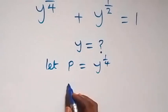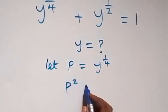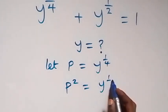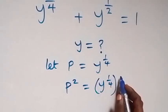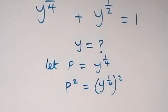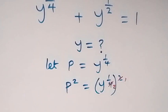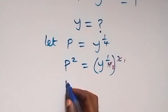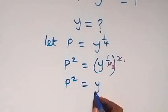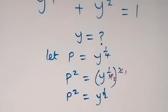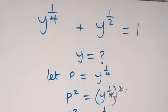And from here, we square both sides, we have p squared equals to y raised to the power 1 over 4 squared. From the law of indices, this power will multiply: 2 times 1 over 4 gives 1 over 2. We can write it as p squared equals to y raised to power 1 over 2. Then, when we substitute this back, this equation becomes p plus p squared equals to 1.